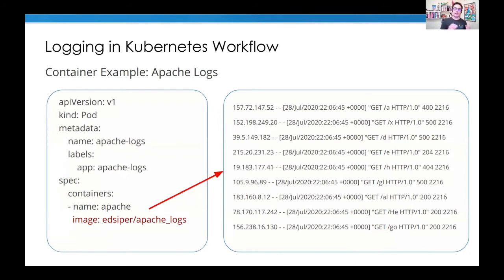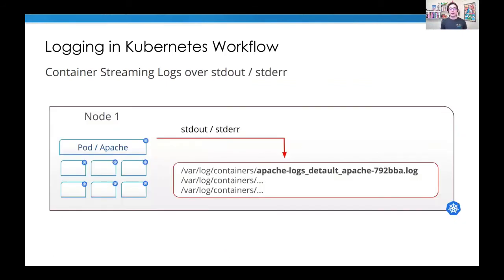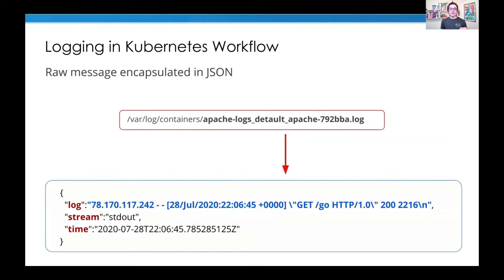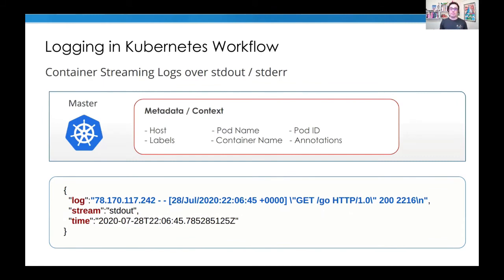Imagine an Apache web server generating log messages — all of them without structure, going to the file system or journald. When these messages are generated, if you consider they're using JSON format for the file system, every container will have its own specific log file. The agent needs to correlate all this information. That message also has stream information and a timestamp for when it was created inside the Kubernetes node.